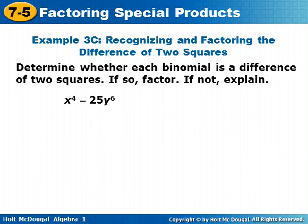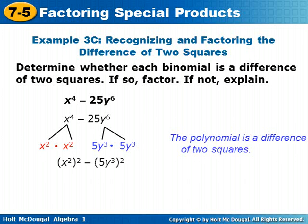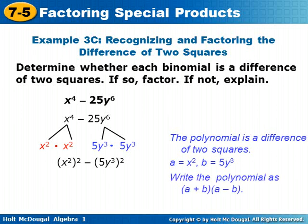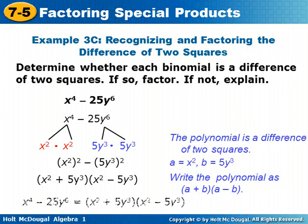Determine whether each binomial is a difference of two squares. If so, factor. If not, explain. For x to the 4th minus 25y to the 6th: x to the 4th is a perfect square — x squared times x squared. 25y to the 6th is a perfect square — 5y to the 3rd times 5y to the 3rd. The polynomial is a difference of two squares, written as x squared squared minus 5y to the 3rd squared. Our a term is x squared and our b term is 5y to the 3rd, so we write it as a plus b times a minus b: x squared plus 5y to the 3rd times x squared minus 5y to the 3rd.